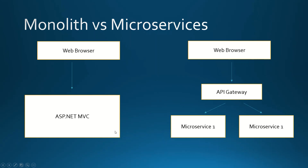We can also use microservices architecture, where we have the web browser sending requests usually to an API gateway, which is then routing these requests to the appropriate microservice. The whole application is split into multiple microservices.